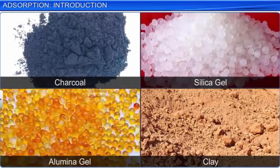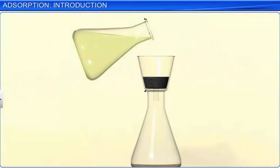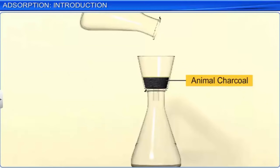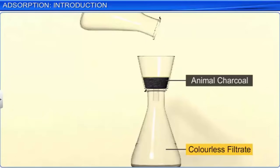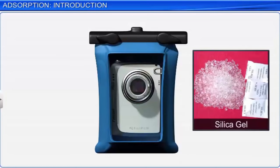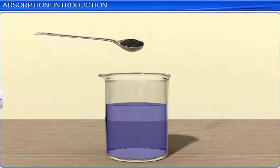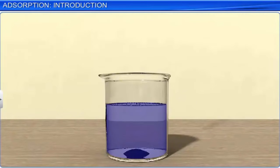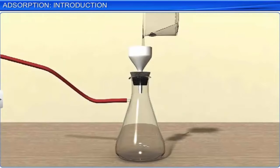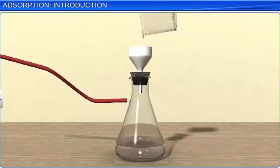Let's look at some examples of adsorption. While clarifying sugar, an aqueous solution of raw sugar is passed over beds of animal charcoal, which adsorbs the undesirable colors and a colorless sugar solution is obtained. When delicate electronic equipment is stored, silica gel is used as a dehumidizer since it makes the air dry by absorbing the water molecules. Another example: add some activated animal charcoal to a dilute solution of an organic dye, methylene blue. Stir the solution thoroughly and then filter it. You will find that the filtrate obtained is colorless, due to the adsorption of the dye on the surface of the animal charcoal.